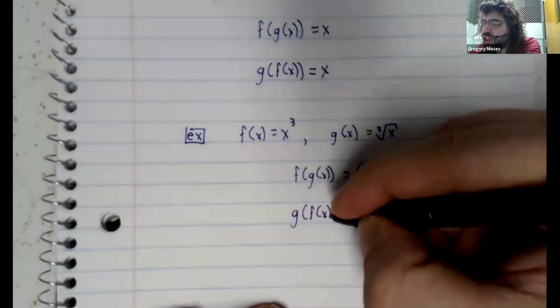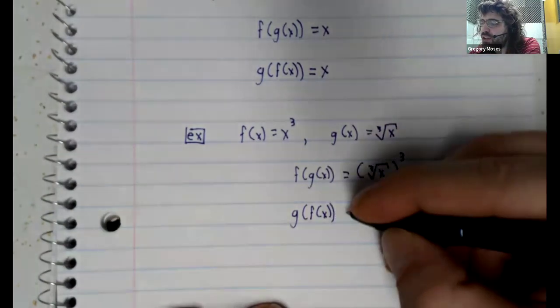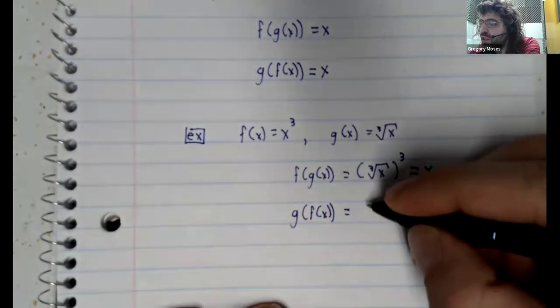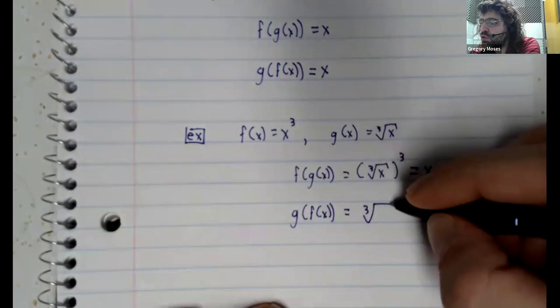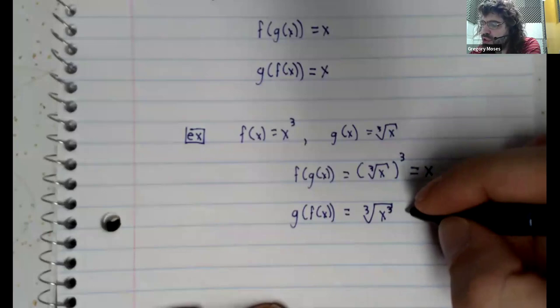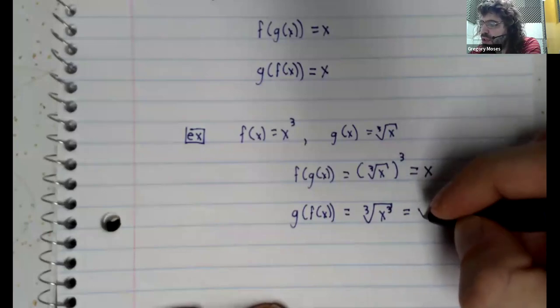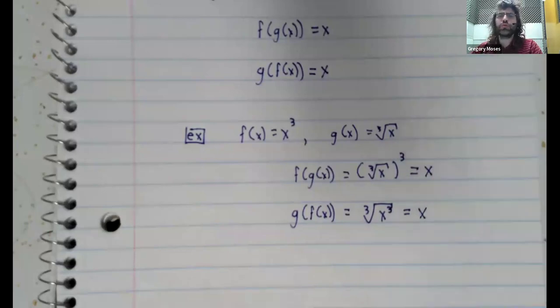And g of f of x is the cubed root of x cubed. And again, the cubed root and the cube cancel, and leave you with x.